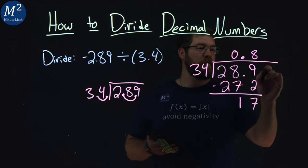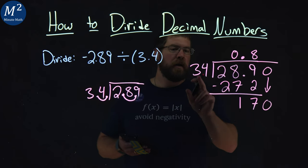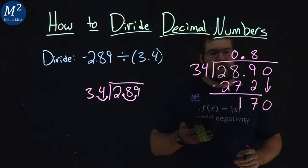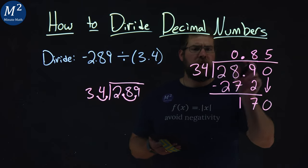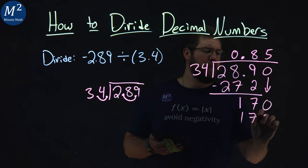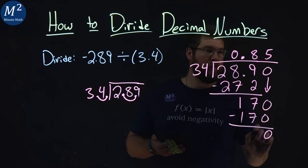But we need a place value here, so let's add a 0 and bring that down. Can 34 now go into 170? And the answer is yes, 5 times to be exact. 5 times 34 is 170. Subtract the two numbers. 170 minus 170 is 0.